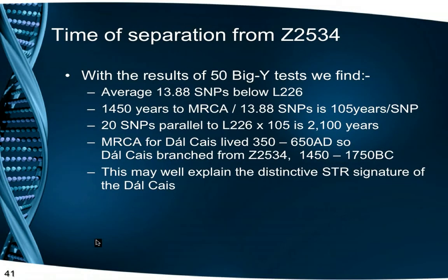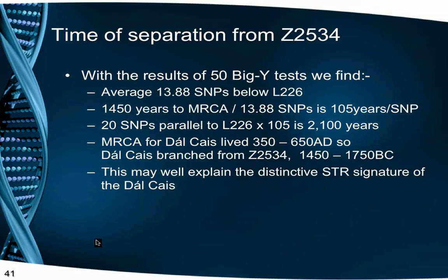We'd always wondered why the Irish Type 3 signature was so unique and unrelated to all other haplogroups. But the fact that we have 20 SNPs in common indicates a long stem with no branching back to the place where Irish Type 3 left the wider tree. In 2,100 years — that's 70 to 80 generations — there's certainly plenty of time for this haplogroup to develop such a distinctive signature. Whether this origin occurred in Ireland or somewhere else, we've yet to discover.